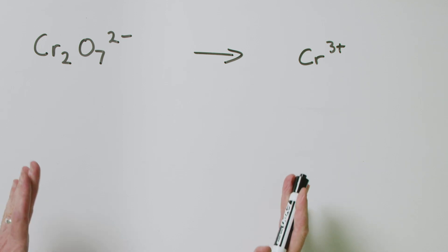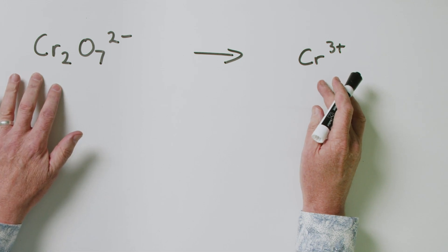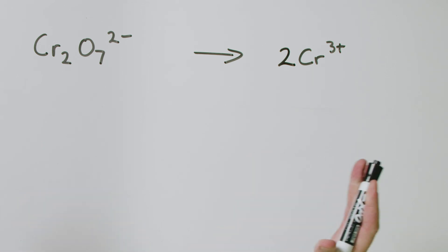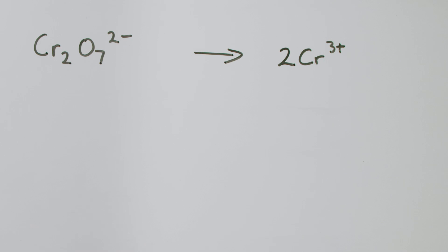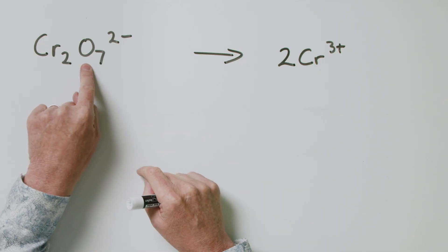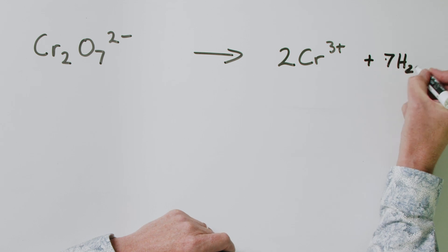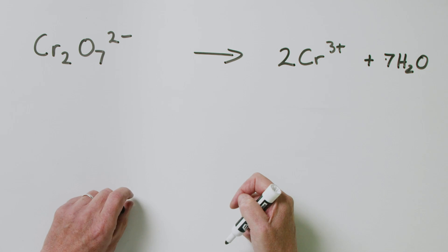Now the slightly more involved bit — dichromate going to Cr3+. The first rule is to balance everything except hydrogen and oxygen first. We've got two chromiums on the left and one on the right, so let's put a 2 in front of Cr3+. Now chromium is balanced. The next rule is to balance your oxygens using water. We've got seven oxygens on the left, so we add seven H2O on the other side to balance them. Chromium and oxygen are now balanced.